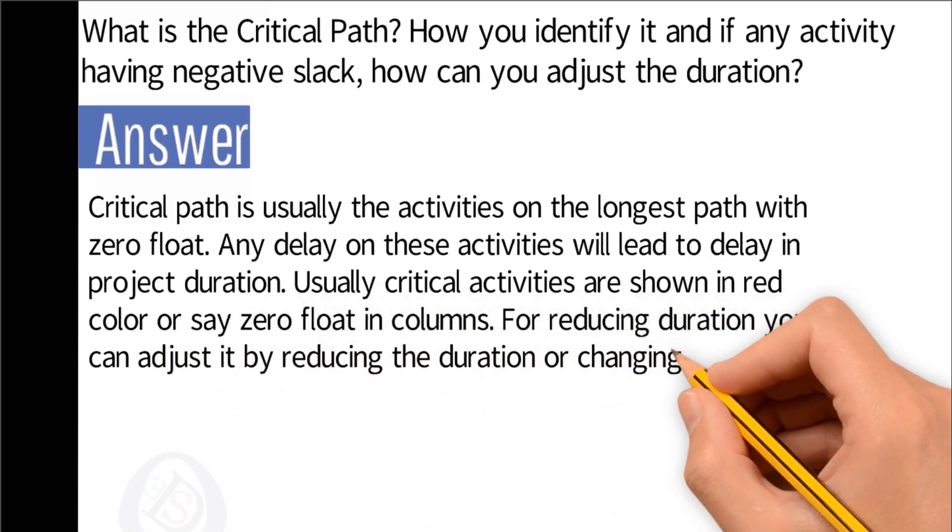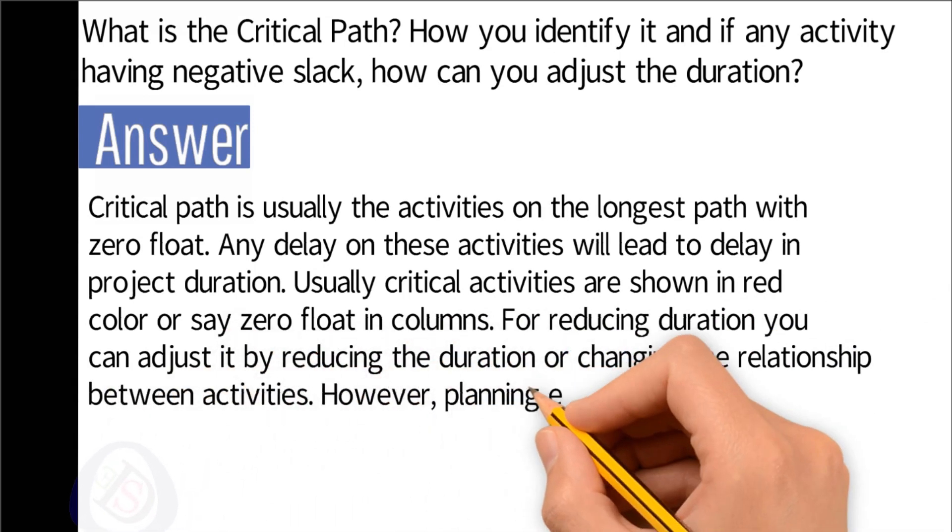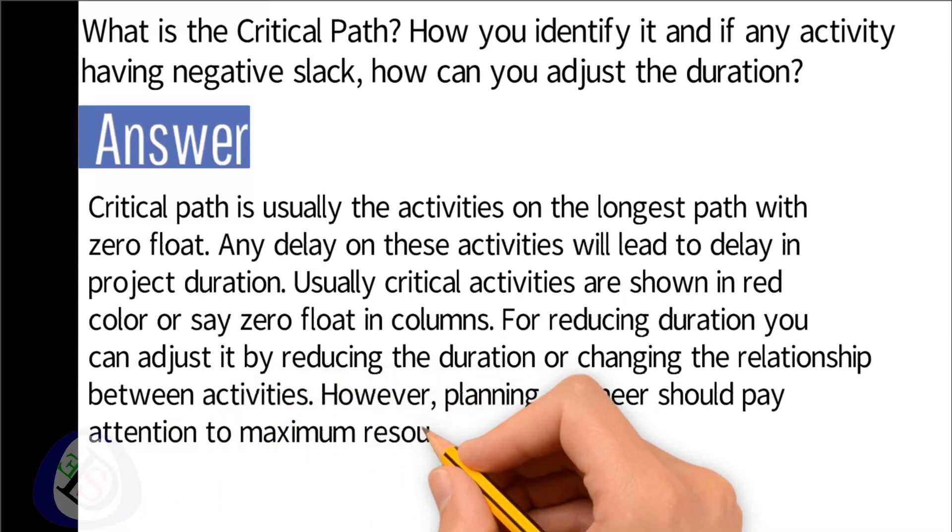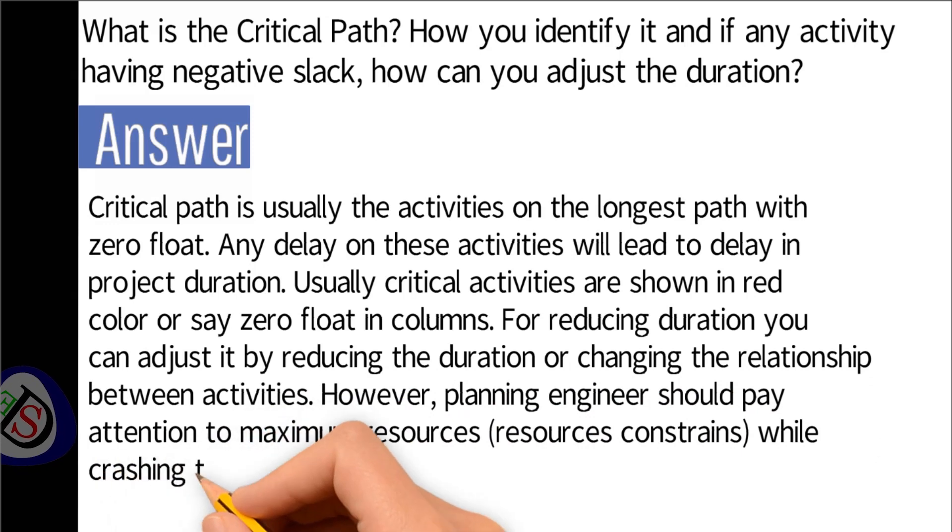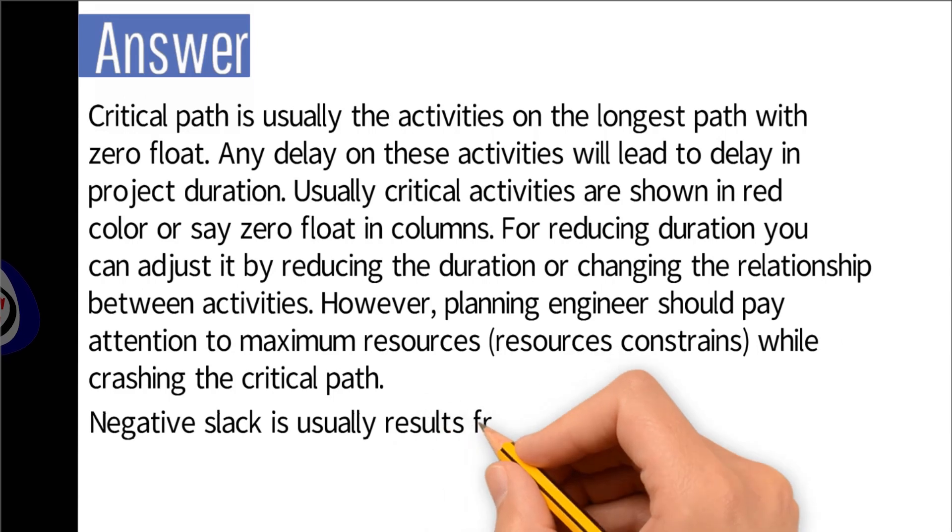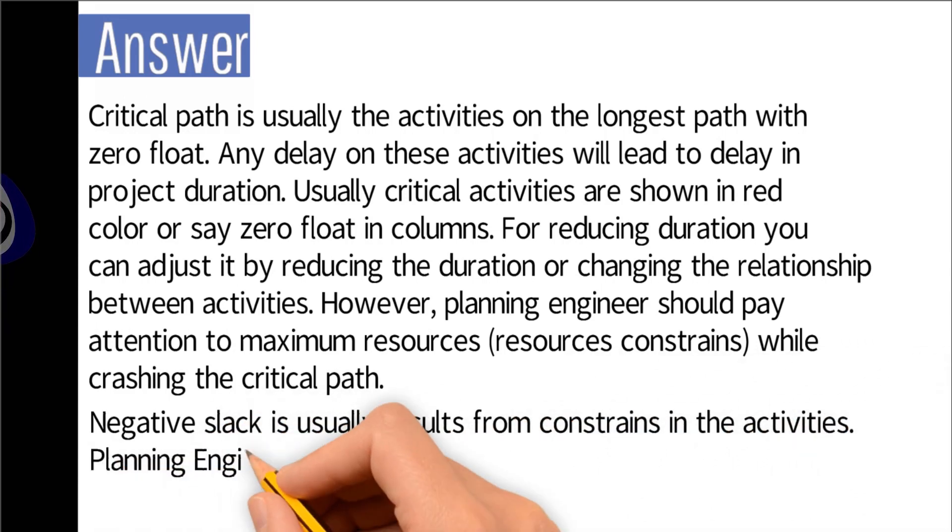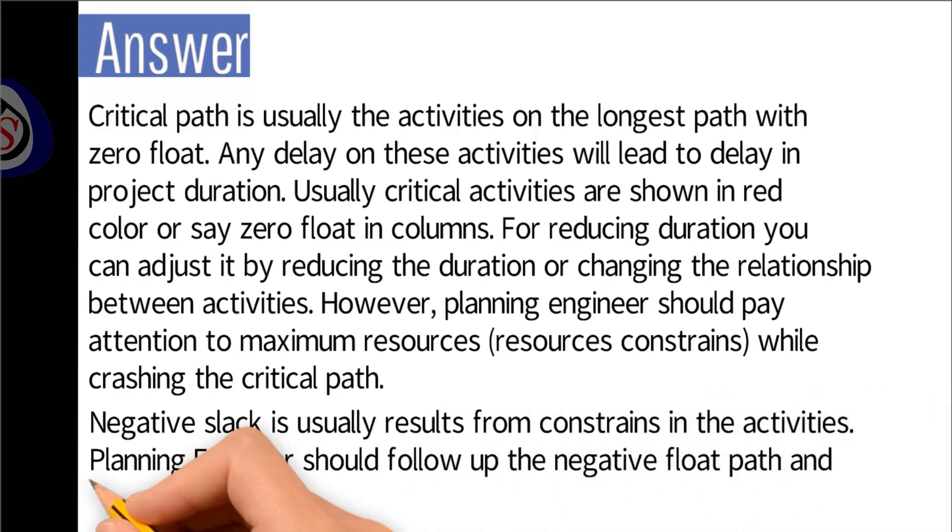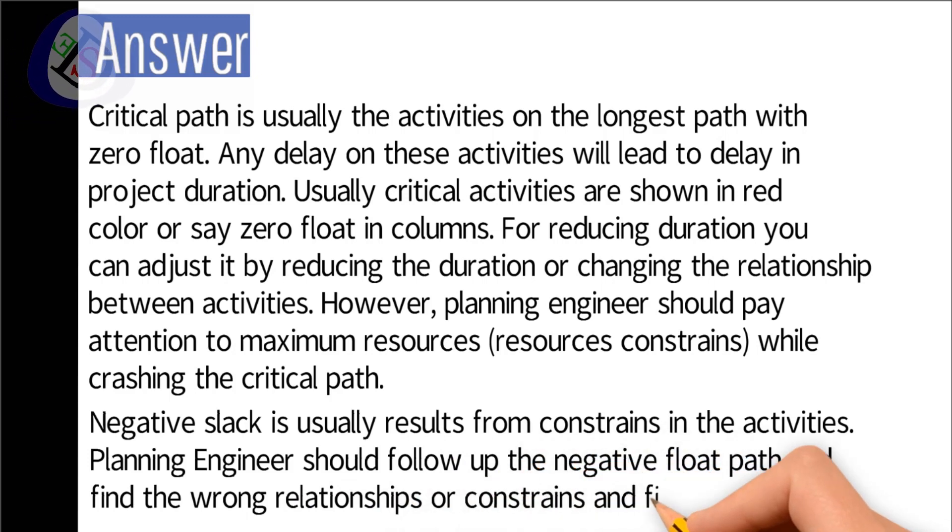For reducing duration, you can adjust it by reducing the duration or changing the relationship between activities. However, planning engineer should pay attention to maximum resources constraints while crashing the critical path. Negative slack is usually results from constraints in the activities. Planning engineer should follow up the negative float path and find the wrong relationship or constraints and fix it.